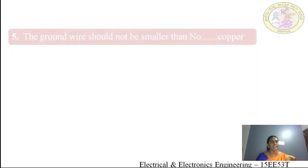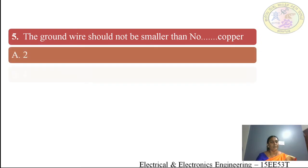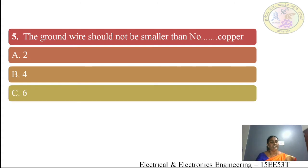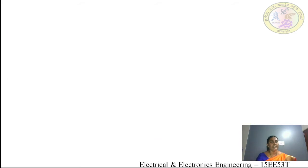Fifth question: the ground wire should not be smaller than number — (A) 2 SWG, (B) 4 SWG, (C) 6 SWG, (D) 10 SWG. The answer is 10 SWG copper wire.